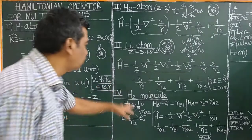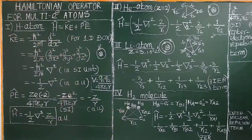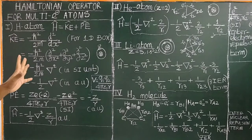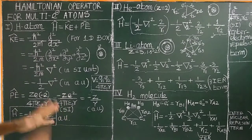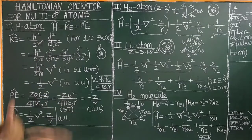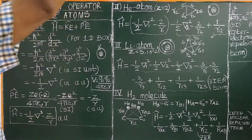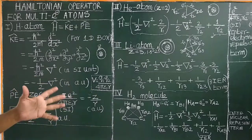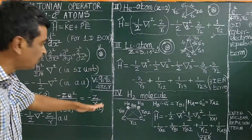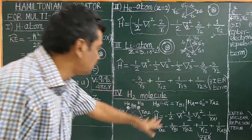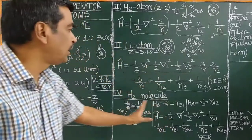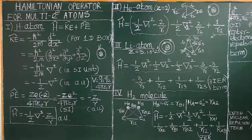For molecules, they are called molecular orbitals. This is a very important Hamiltonian operator. From the Schrödinger wave equation H-cap psi equal to E psi, the energy levels are obtained and the wave functions are nothing but atomic orbitals, or for molecules, molecular orbitals.